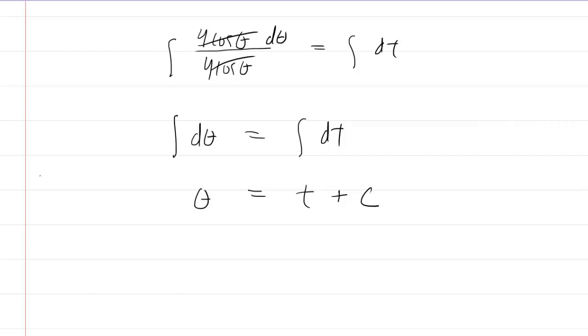Recall we had said that x was equal to 4 sine of theta. So what we'll do is divide both sides of that equation by 4. This gives us x over 4 is equal to sine of theta. Then take the inverse sine on both sides. You'd be left with the inverse sine of x over 4 is equal to theta.